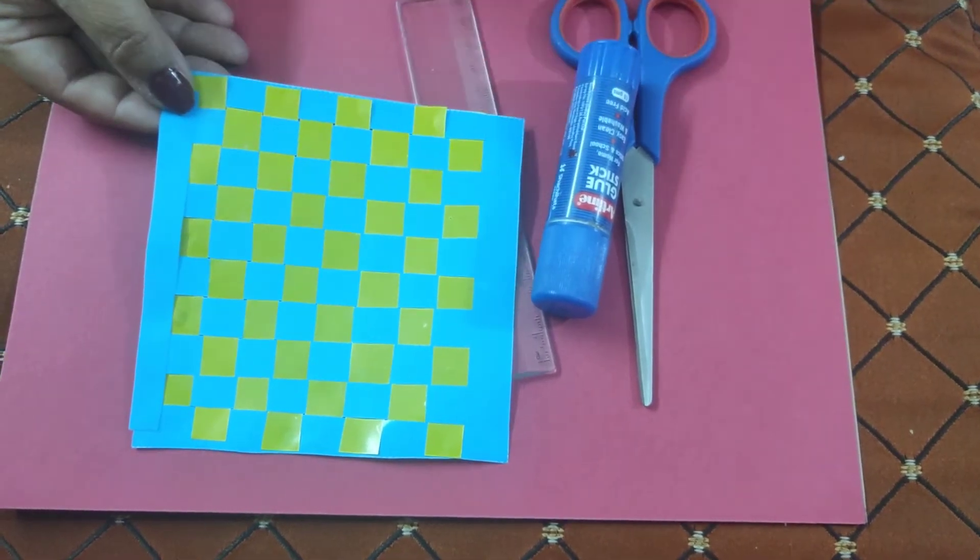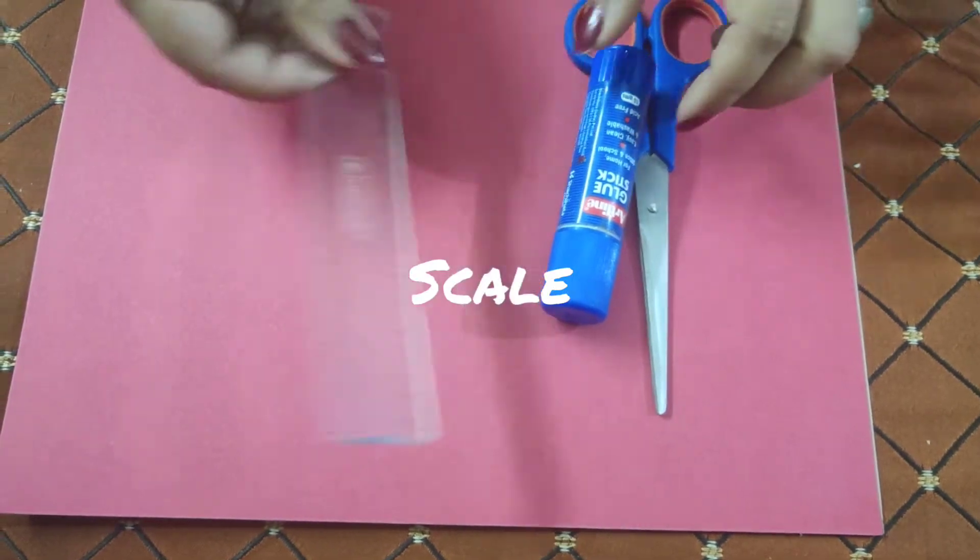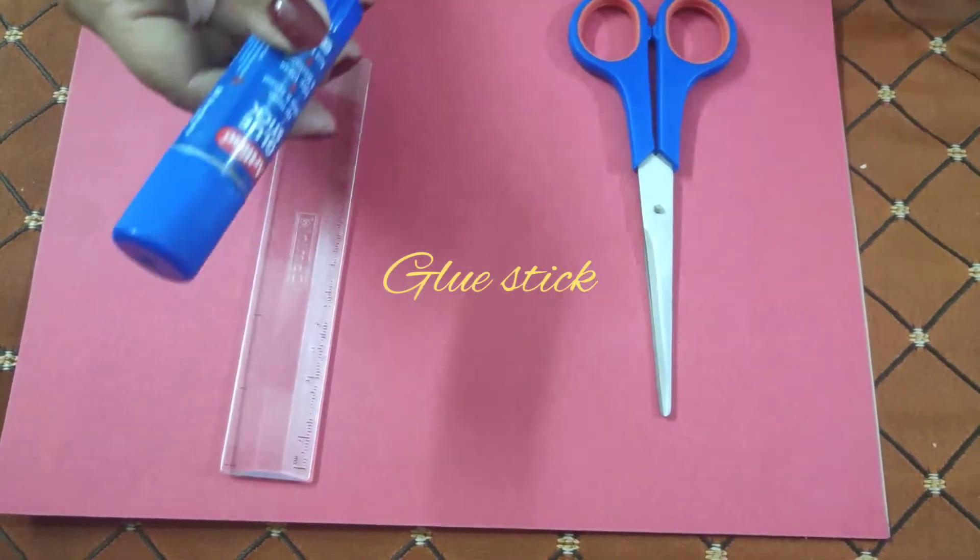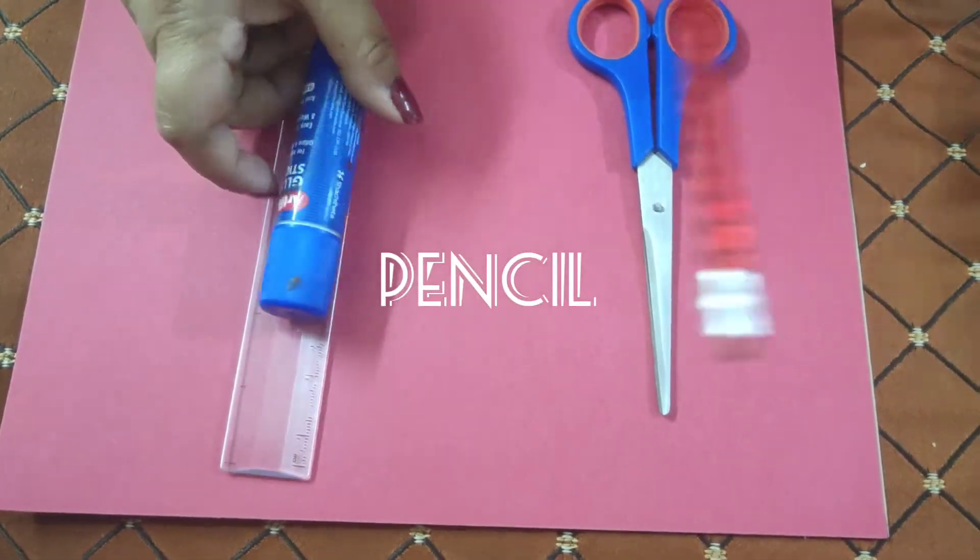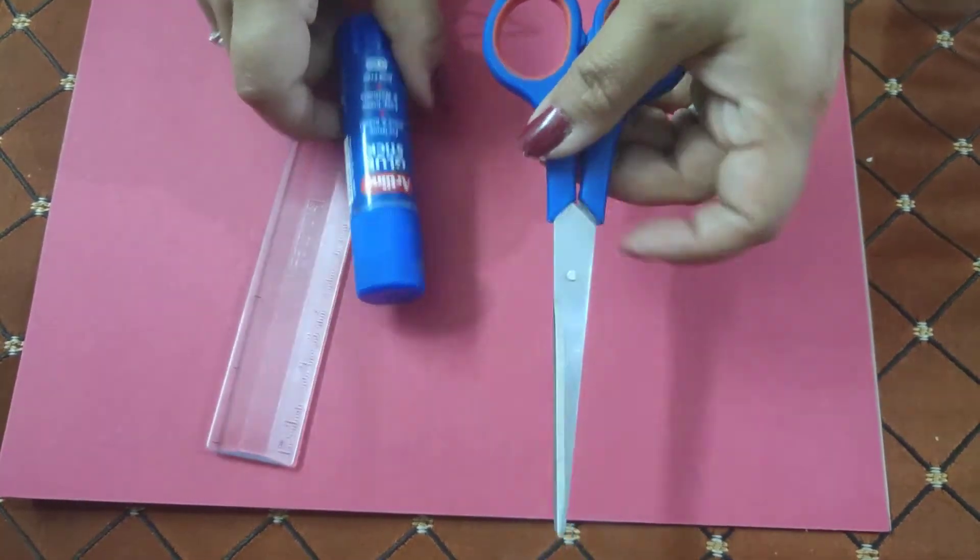Today we will learn to make a beautiful mat. Materials required are a scale, a glue stick, a pencil, a pair of scissors, and two colorful sheets.